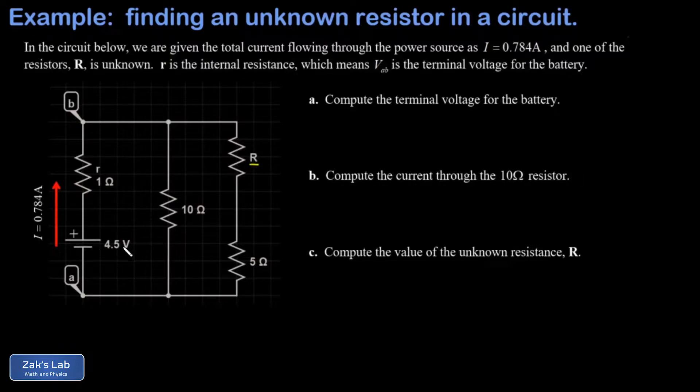In the left branch of the circuit, we're given an ideal EMF of 4.5 volts. That's in series with an internal resistance of 1 ohm, and that makes the potential difference between nodes A and B, the terminal voltage of the power source.